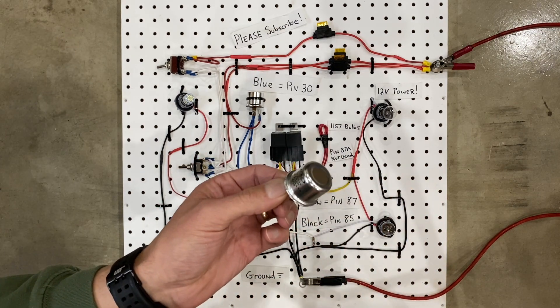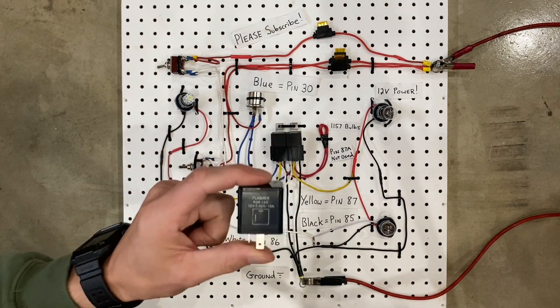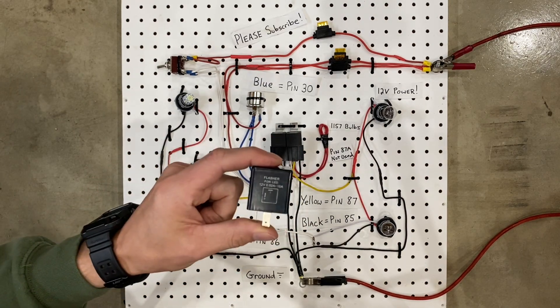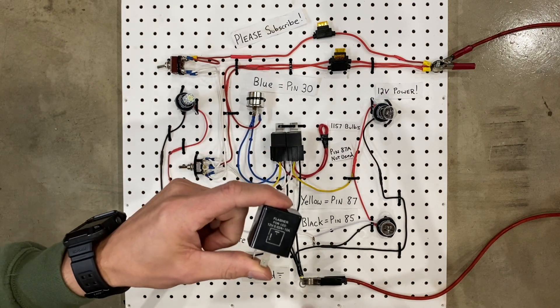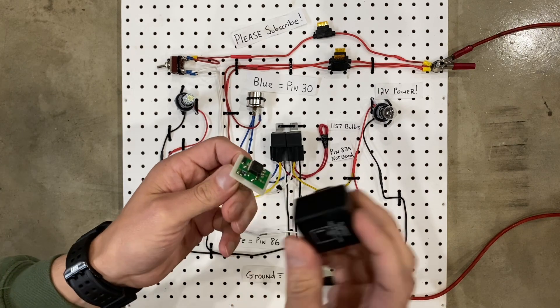So LED bulbs need a totally different type of flasher. Let me show you. Now this is a flasher for an LED circuit and it works in a totally different way. Let me show you. Inside is a circuit board.